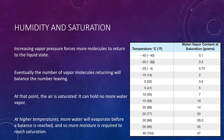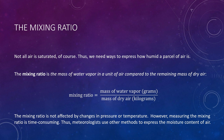Not all air is saturated, so we need ways to express how humid a parcel of air is. One method is to specify the amount of water vapor in a unit of air. The mixing ratio is the mass of water vapor in grams divided by the mass of dry air in kilograms. Because the mixing ratio is expressed in units of mass, it is not affected by changes in pressure or temperature — the quantity of water vapor remains the same. However, measuring the mixing ratio by direct sampling is time-consuming, so meteorologists commonly use relative humidity and dew point temperature instead.